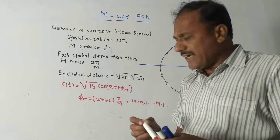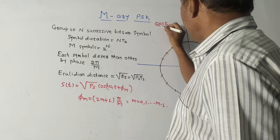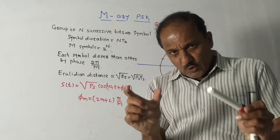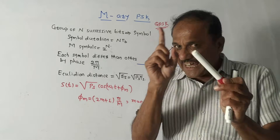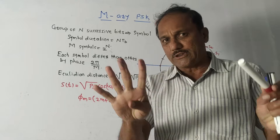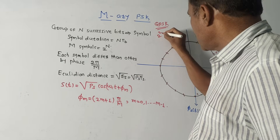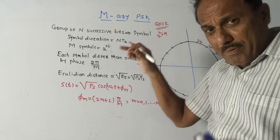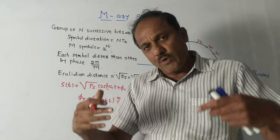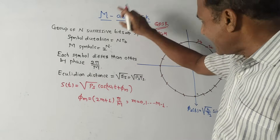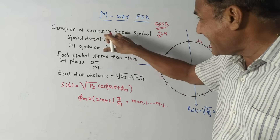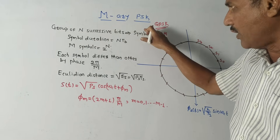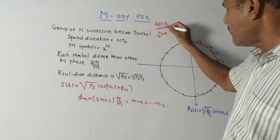In the previous video we learned QPSK — quadrature phase shift keying. In QPSK we made a group of two successive bits, so there were four possible symbols. We calculated it as 2 raised to 2, i.e., 2 raised to n equals M, so M equals 4, giving four symbols. Likewise, we can make a group of n number of bits — that is called M-ary PSK. A group of n successive bits forms one symbol, and the symbol duration is n × Tb.